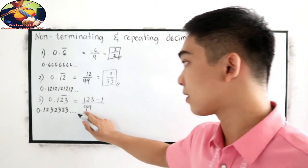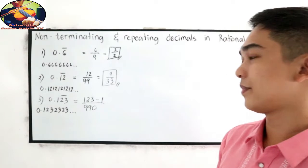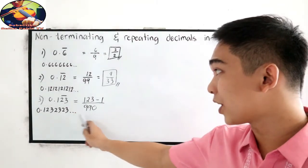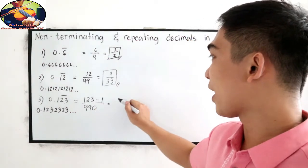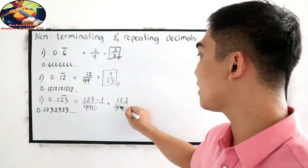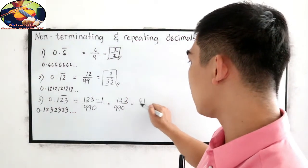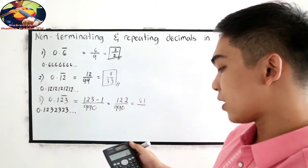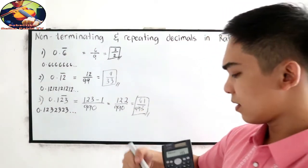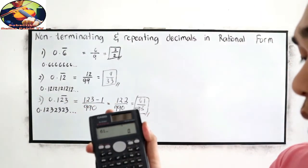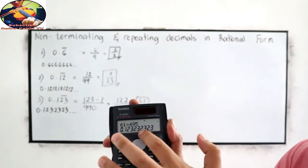Since we have 2 digits under the bar, we write 9, 9 in the denominator. Since 1 is not included in our bar, replace that position with 0 — so the denominator is 990. Our numerator is 123 minus 1, which gives us 122 over 990. Divisible by 2, that simplifies to 61 over 495. Let us check: 61 divided by 495 gives 0.1232323232323. Correct.